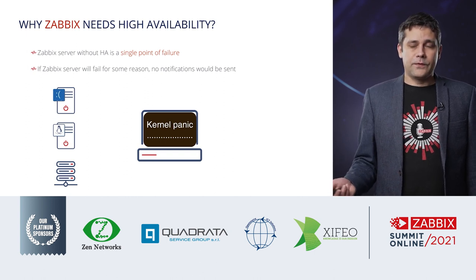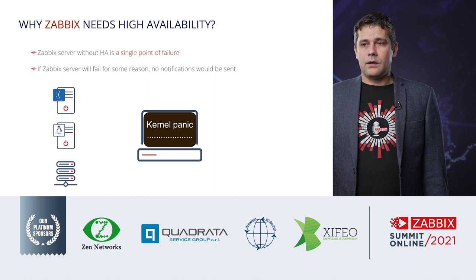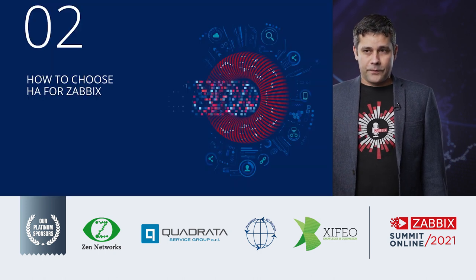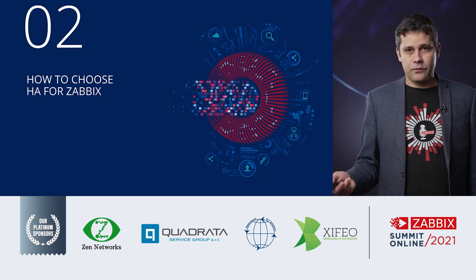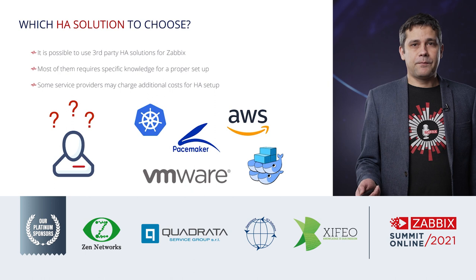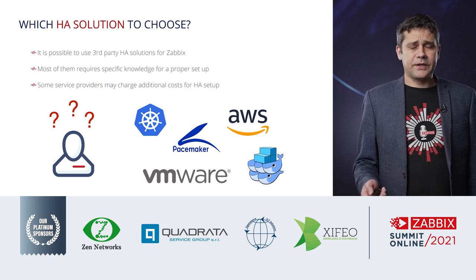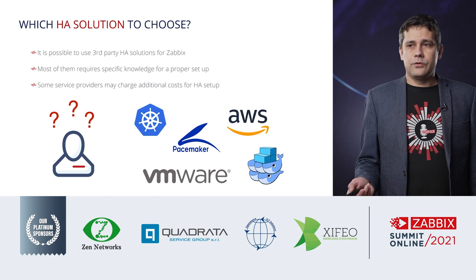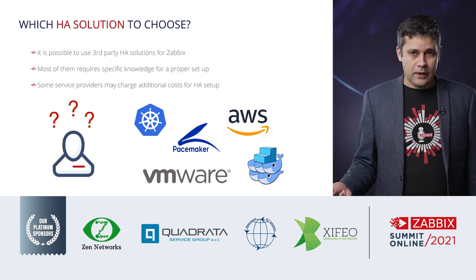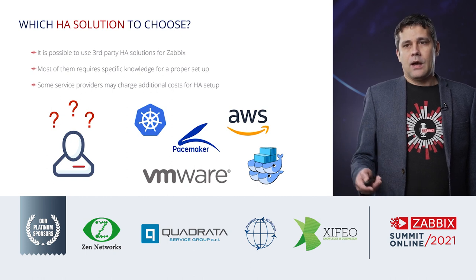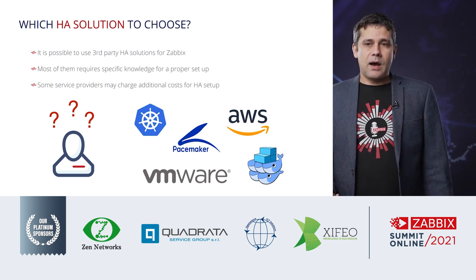You want to have some kind of high availability solution for Zabbix so that if something goes wrong, it automatically fails over and you're always informed. The question is how to choose the proper solution. In previous years, it was possible to set up high availability for Zabbix using third-party solutions. But the question was always which one to choose, because some require expertise — you'd need to hire a specialist who knows how to set up, say, Corosync. Some are cloud-based but the cloud provider charges additional costs.